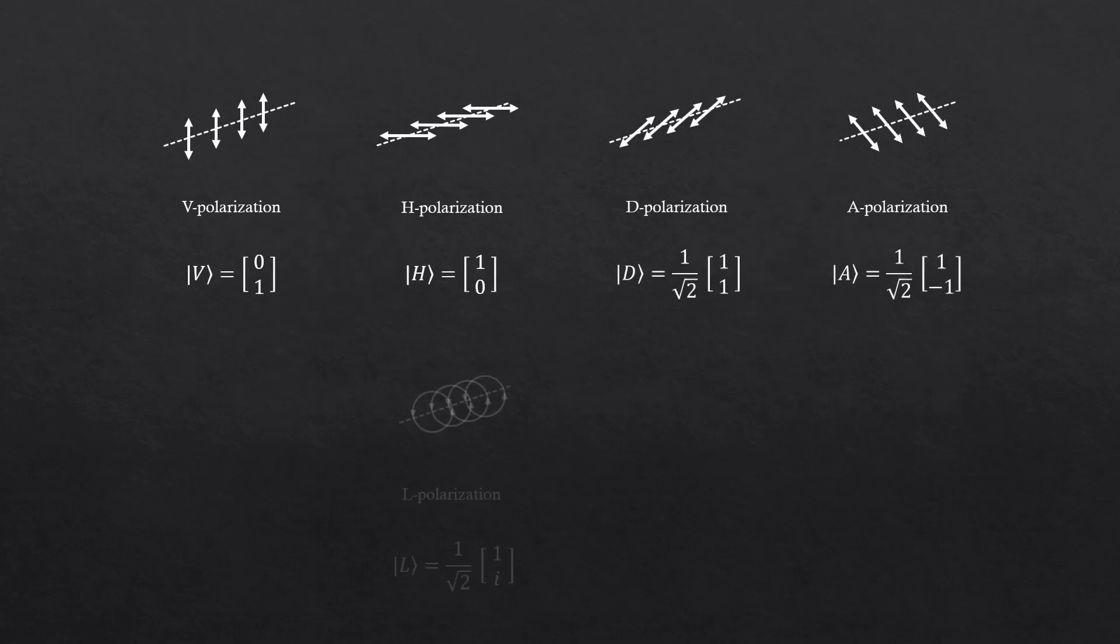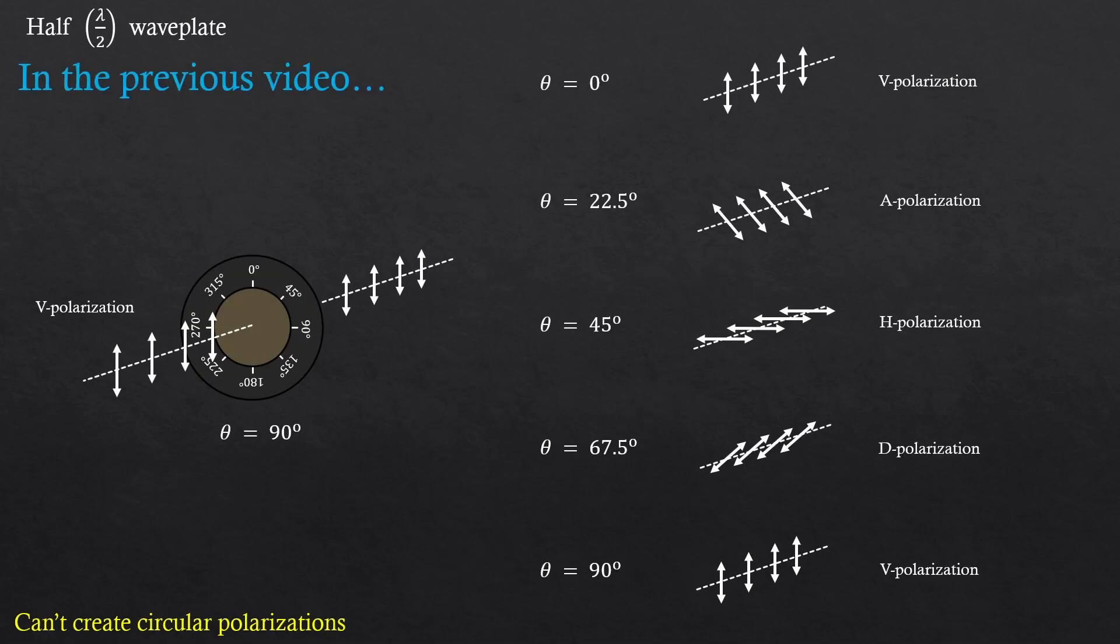These are the different types of polarization states. The DALR states have 1 over square root of 2 in the front for normalization. Again, I brought this from the previous video. I'm going to mathematically show the changes in the vertical polarization by a half waveplate as an example.